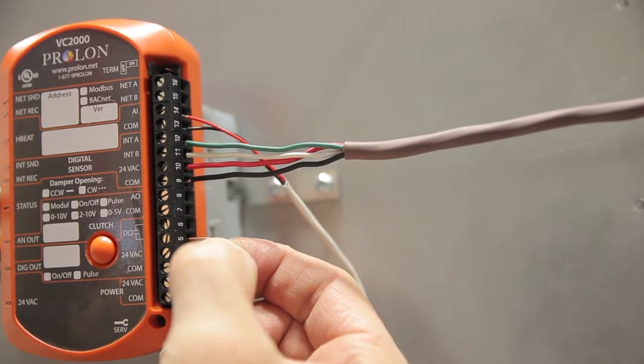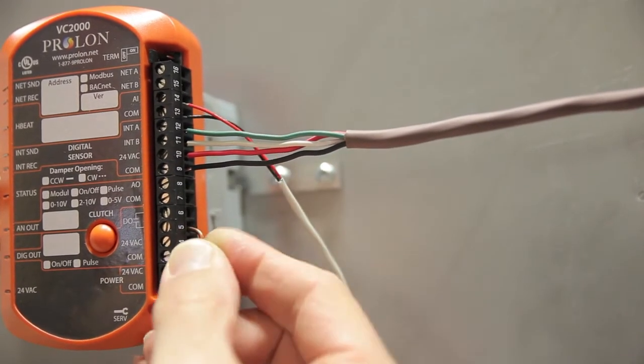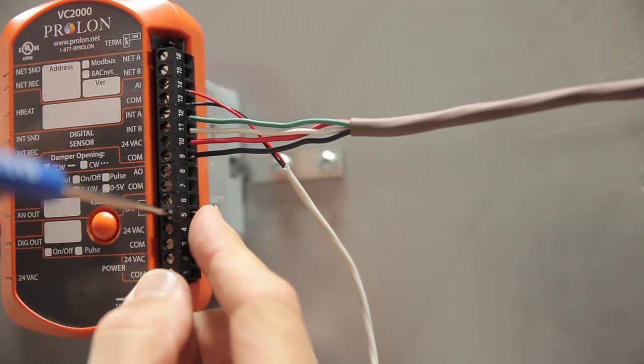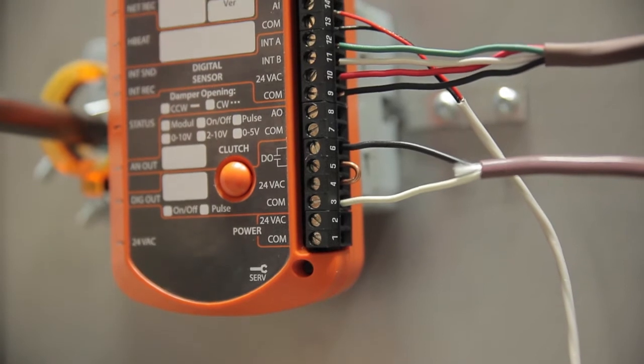If instead your equipment needs a live 24VAC signal to be enabled, then first insert a wire jumper between terminals 4 and 5, and then connect your equipment to terminals 3 and 6.